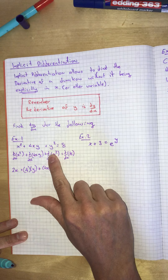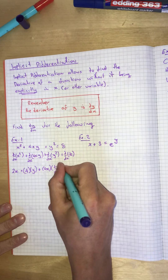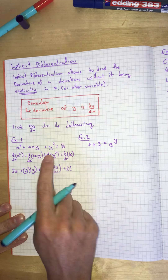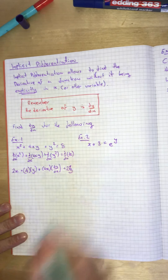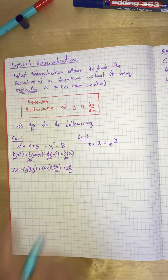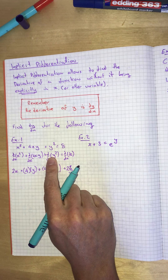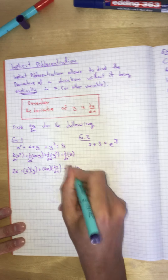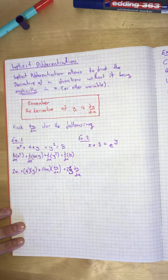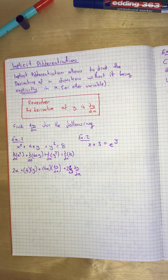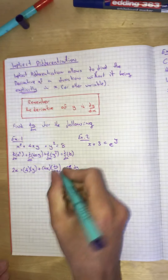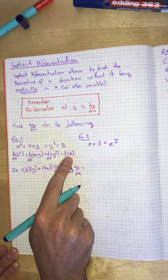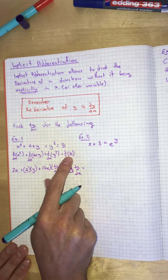This is just chain rule. Differentiate the external function and we get 2y, then differentiate the internal function which is y, and the derivative of y is dy/dx. So the derivative of y squared is 2y dy/dx. For the derivative of 8 — differentiate a number — you just get 0.